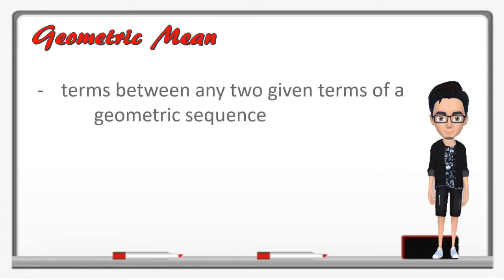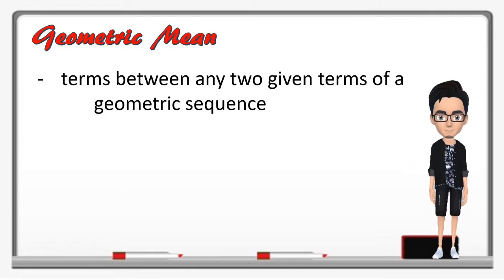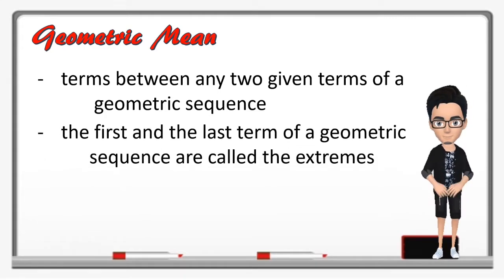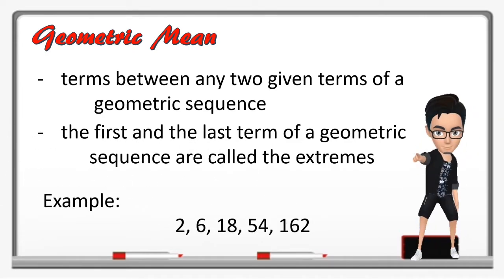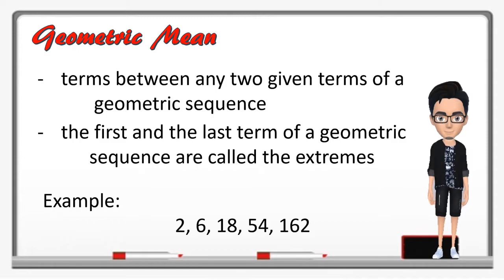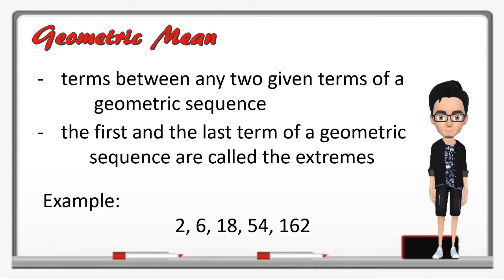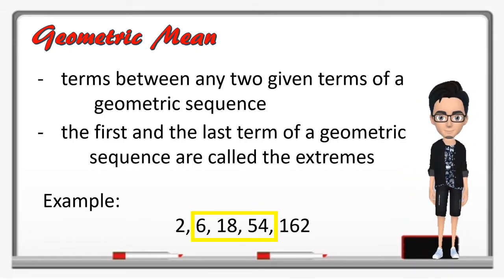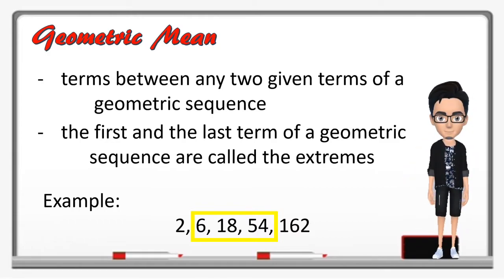Basically, we define geometric mean as terms between any two given terms of a given geometric sequence. The first and the last term of a geometric sequence are called the extreme. For example, let's say we have 2, 6, 18, 54, and 162. So the geometric means in this given example are 6, 18, and 54. So therefore, the extremes are 2 and 162.